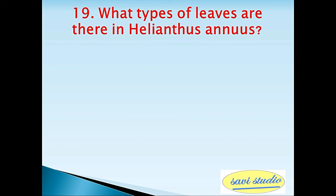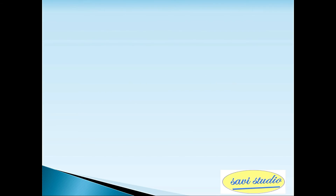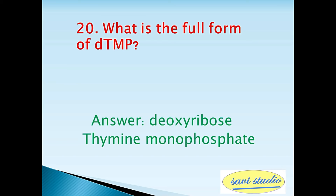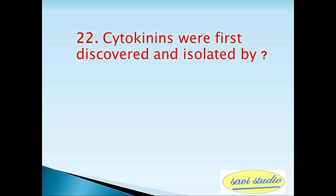Nineteenth question: What type of leaves are there in Lanthanas? Answer: dorsiventral leaves. Twentieth question: What is the full form of dTMP? Answer: Deoxyribose Thymine Monophosphate. Twenty-first question: Synthesis of an mRNA chain using one strand of DNA as a template is called — answer: transcription.